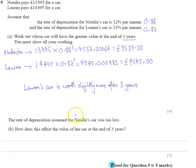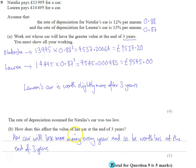Her car will lose more money every year and so be worth less at the end of three years. The car is going to lose more money because the depreciation rate is higher, meaning it's worth less after every year. And when you compound the interest, it compounds and compounds, and it's definitely worth less after three years.